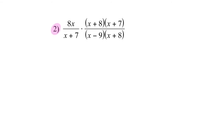On this one, I'm just going to cancel out whatever is the same: x plus 7 and x plus 7. But now I can also simplify within the same fraction — the x plus 8 I can also cancel out. So at the end, I just have x over x minus 9.